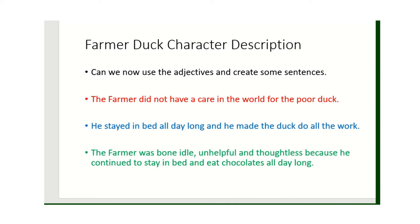My third sentence uses commas as a list to describe the farmer: 'The farmer was bone idle, unhelpful and thoughtless.' Then I've used the conjunction 'because' to extend that sentence: 'because he continued to stay in bed and eat chocolate all day long.' I could have put a full stop after 'thoughtless' — that sentence could stand alone as a commas-as-list — but I've extended it using 'because'.